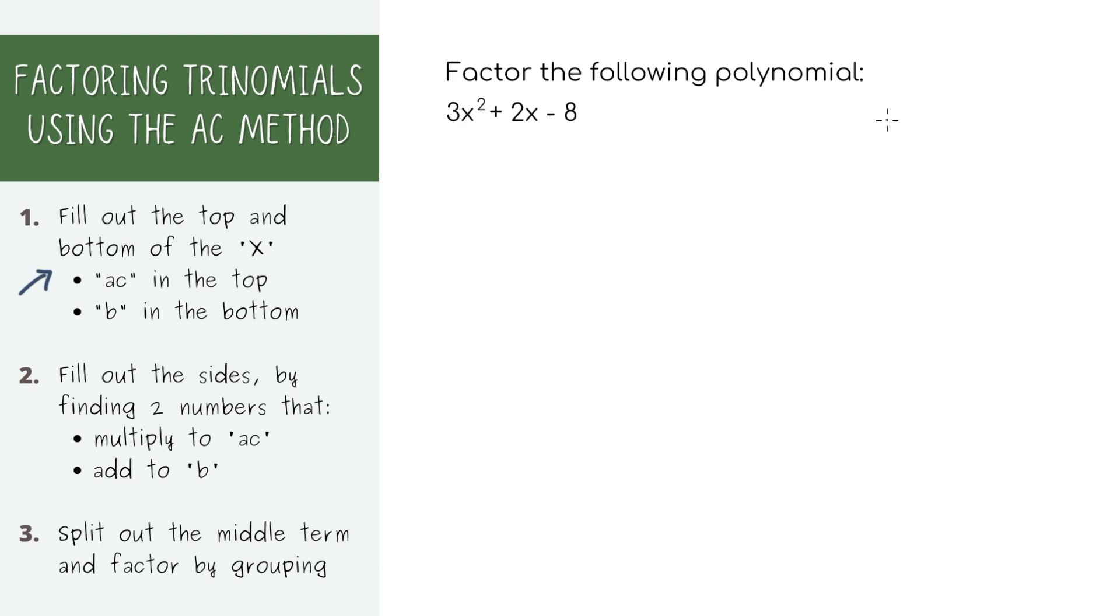In order to factor, we're going to draw this X and put the value of a times c in the top quadrant. Just go with it for now. So we're going to multiply 3 and negative 8 and put it here. Then put b in the bottom quadrant.